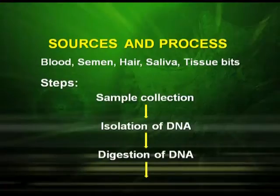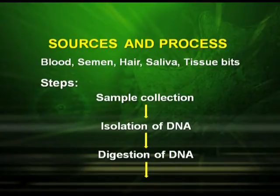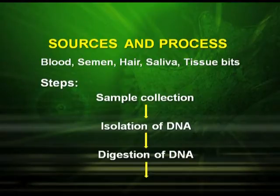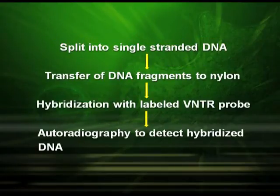During the process of DNA fingerprinting, the sources from which DNA is obtained include blood, semen, hair, saliva, or tissue bits. The steps of DNA fingerprinting are: first, sample collection from the site; second, isolation of DNA; third, digestion of DNA by restriction enzymes; fourth, splitting into single-strand DNA; fifth, transfer of DNA fragments to a nylon sheet; sixth, hybridization with a labeled VNTR probe; and finally, autoradiography to detect the hybridized DNA.